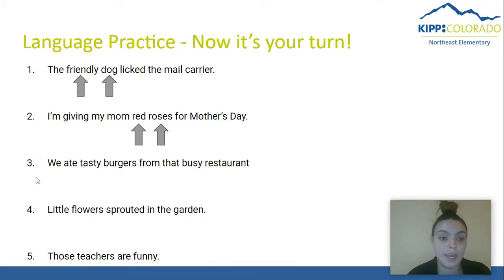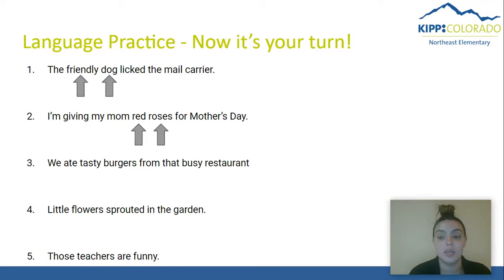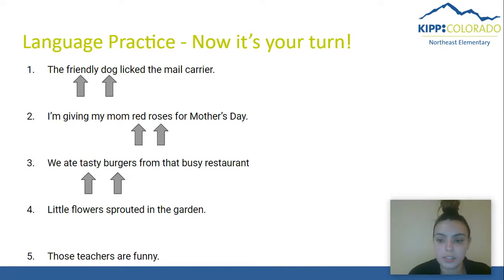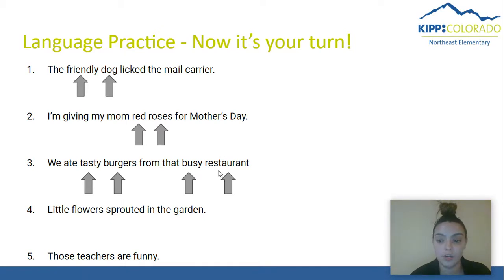Let's look at number three: 'We ate tasty burgers from that busy restaurant.' This one is a little bit tricky, Kipsters. Where is our describing word, or adjective, in the sentence? You got it — 'tasty,' and what is tasty describing? Burgers, which is a noun. But did you notice that this sentence has another adjective and another noun? Busy restaurant — the place, restaurant, which we know is a noun because it's a person, place, or thing. And what kind of restaurant is it? A busy one.